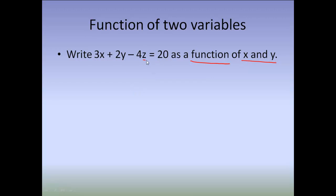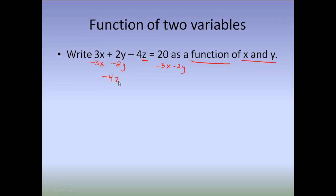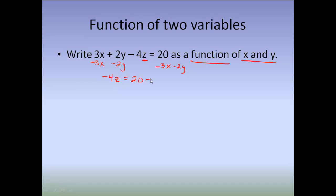So, the first thing we're going to do is we are going to isolate the Z. And I'm going to do that by subtracting 3X and subtracting 2Y from both sides. So, I'm left with negative 4Z equals 20 minus 3X minus 2Y. And then I need to divide by negative 4 on everything. And so, I end up with Z is equal to negative 5 plus 3X over 4. These two negatives make a positive right here. And then plus Y over 2.